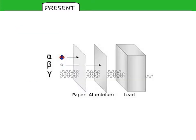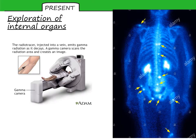When looking at these uses, bear in mind what stops alpha, beta, or gamma, as that affects their suitability for various purposes. For exploration of organs, we use medical tracers. These are injected into the body or consumed as a drink, depending on where in the body we want to target. They are absorbed at different rates by different types of tissue.